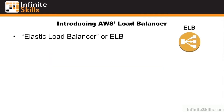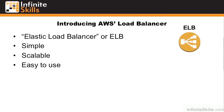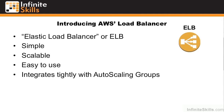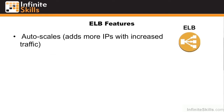Amazon's load balancer is called an Elastic Load Balancer, or ELB. It's very simple, very scalable, very easy to use, and it integrates tightly with autoscaling groups. It autoscales by adding more IPs behind a DNS endpoint.